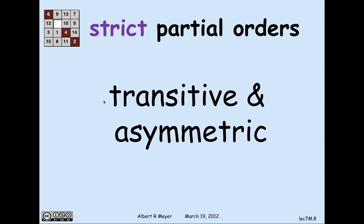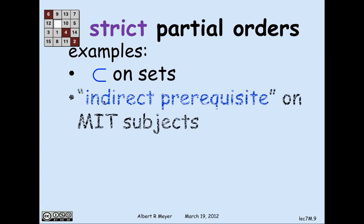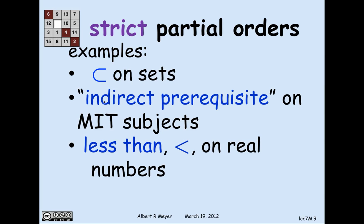A strict partial order is a relation that has the two properties of being transitive and asymmetric. Examples include: the proper containment relation on sets, which satisfies transitivity and the fact that if one set is properly contained in another, the second cannot be properly contained in the first; the indirect prerequisite relation on MIT subjects; and the less-than relation on real numbers.